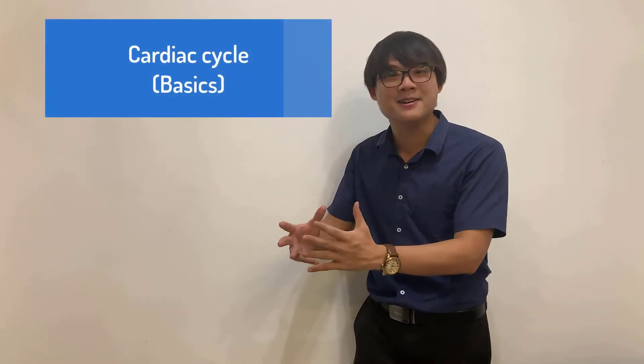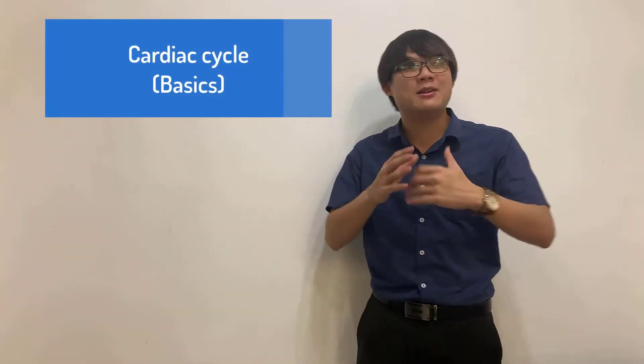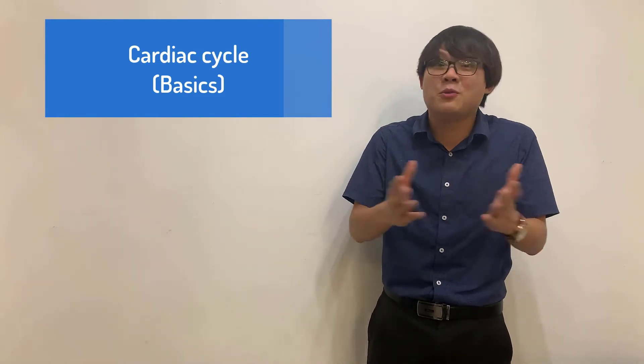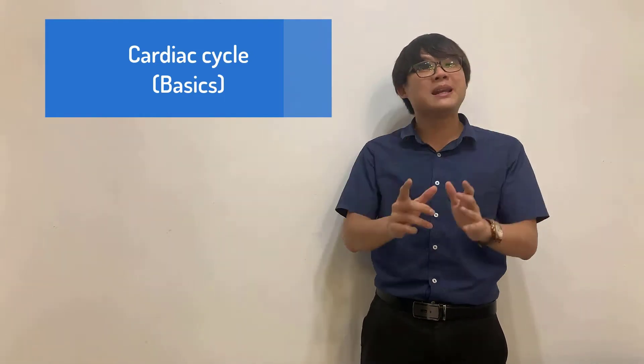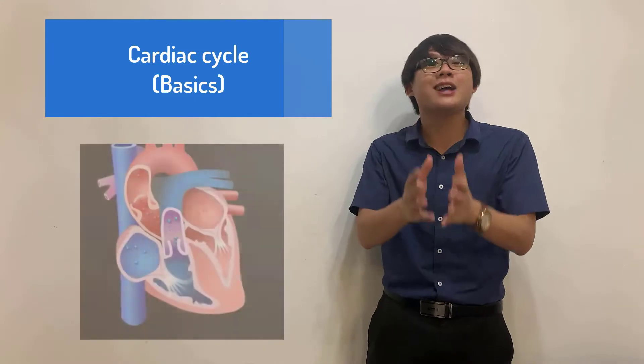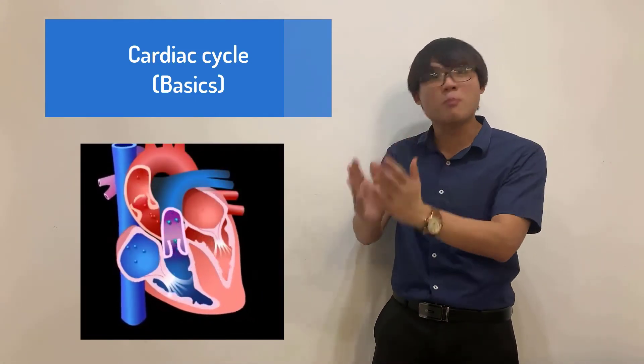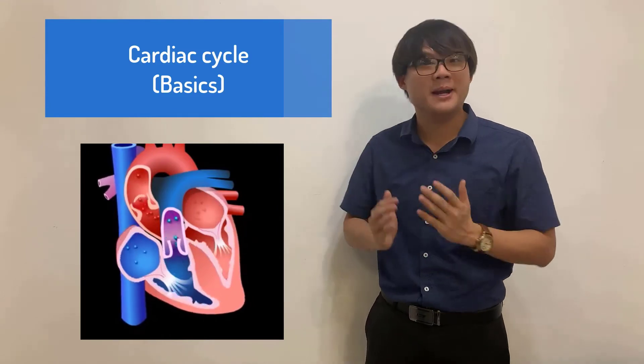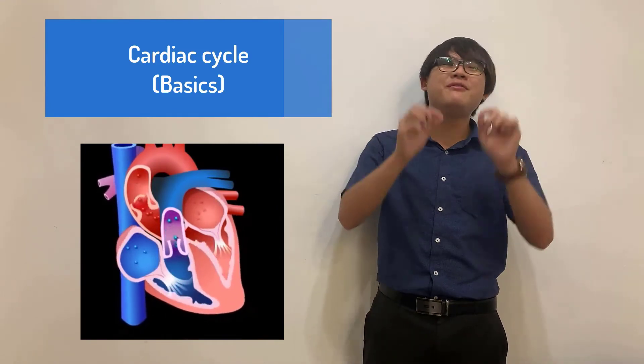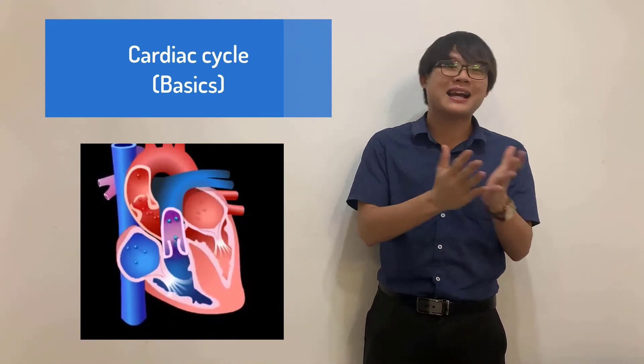The heart does not contract and relax in a random manner. If the heart is contracting in a random manner, in medicine, we call this as arrhythmia. In a completely normal person, the heart should actually contract and relax in a proper and sequential manner. So in the very basic form of cardiac cycle,